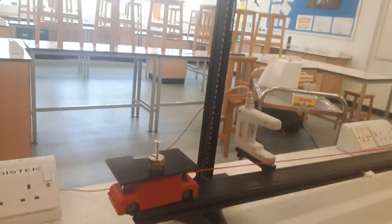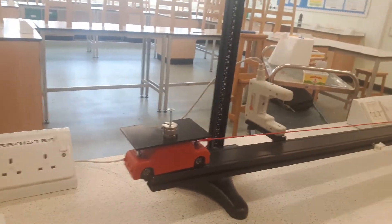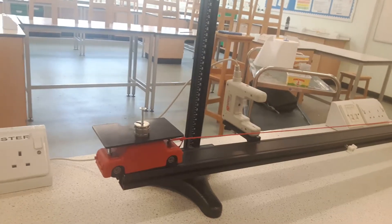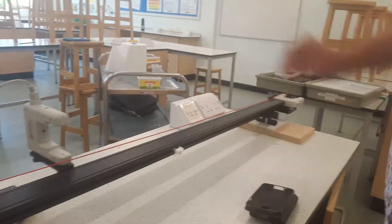So this is the experimental method for Newton's second law, where we are changing the size of the pulling force whilst maintaining a constant mass of the system.